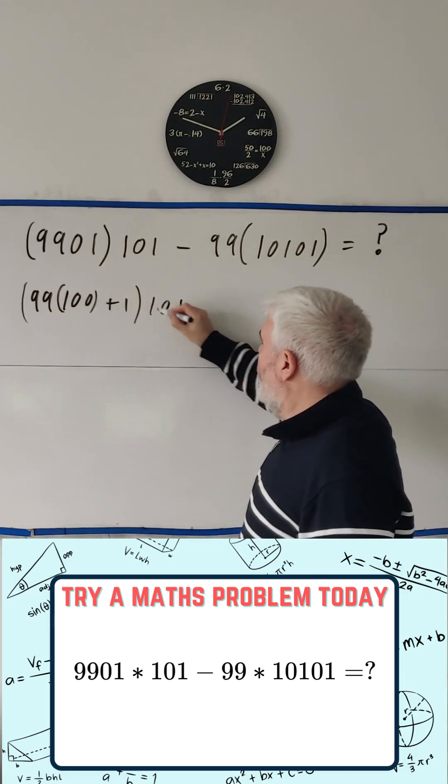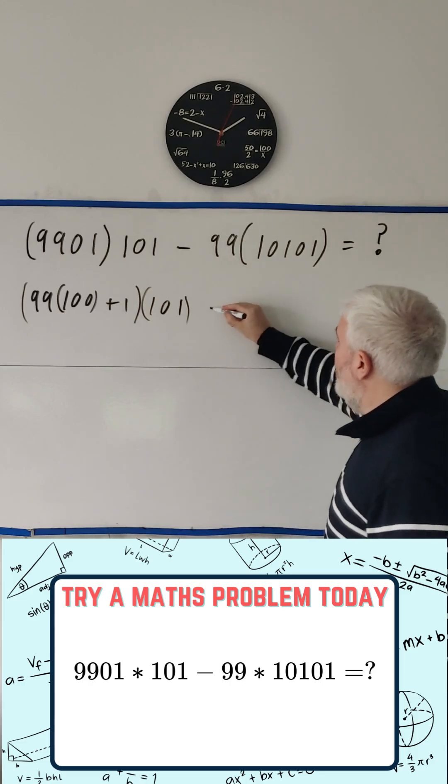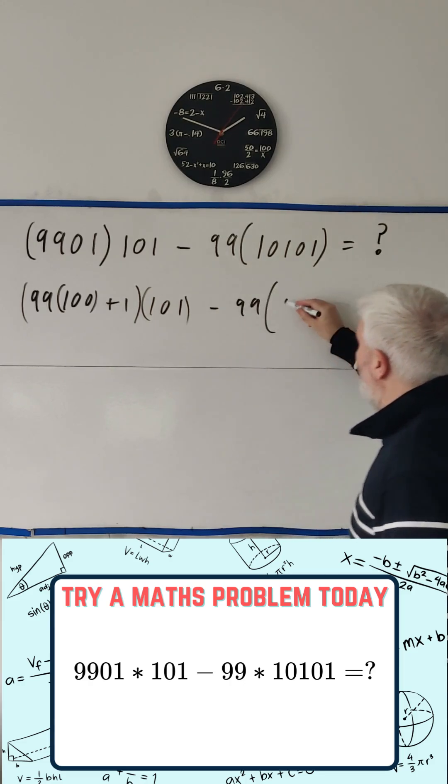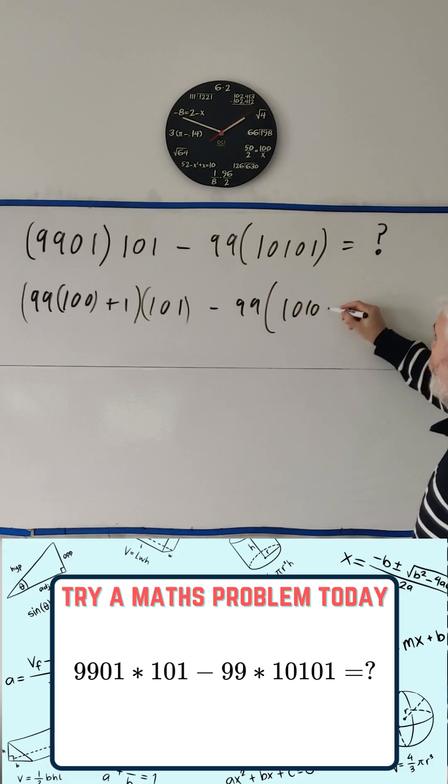and that's still multiplying by 101. Over here, we already have a 99 on its own, multiplying out 10,101.